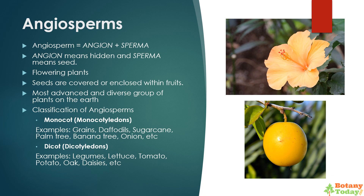What are angiosperms? The word angiosperm is made from two words: angion, meaning hidden, and sperma, meaning seed. These are flowering plants. They have seeds enclosed within fruits. These are the most advanced and diverse group of plants on the earth. Classification of angiosperms: Monocot (monocotyledons) — examples include grains, daffodils, sugarcane, palm tree, banana tree, onion, etc. Dicot (dicotyledons) — examples include legumes, lettuce, tomato, potato, oak, daisies, etc.